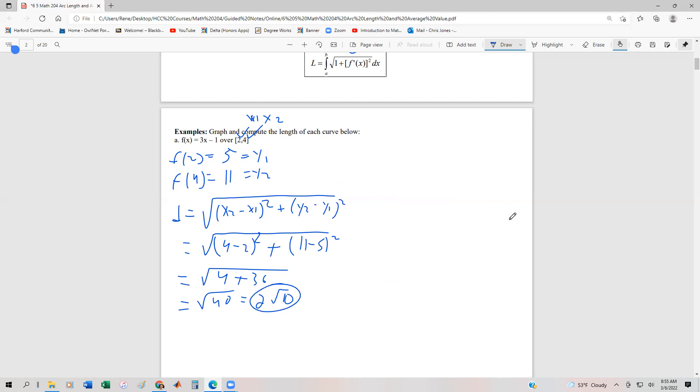So let's hold on to that answer, because now what we're going to do is we're going to use the definition that we can use for calculus to find this. Now, of course, it says to graph it, and we know it's a straight line, and we're in quadrant one. So we have the point 2,5, so it's right here, and then we have the point 4,11. So our curve, really not that much of a curve, just looks something like this. And so we know that the length already is 2 roots of 10 by using our distance formula.